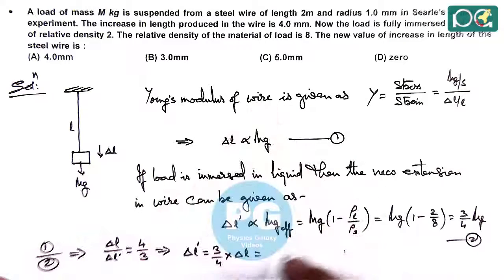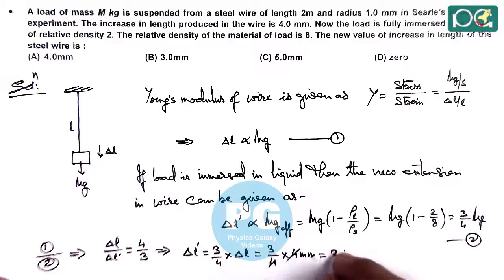Delta L is given to us as 4 mm, so 3 by 4 multiplied by 4 mm gives us a final value of 3 mm, which matches with option B in the question.